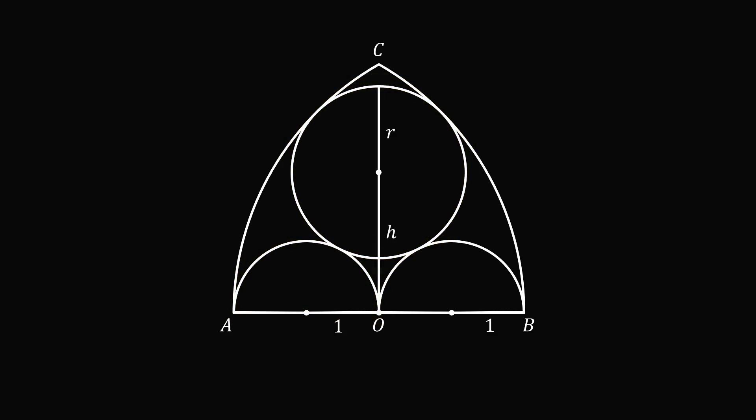So let's connect the centers and the tangent point. The semicircle has a radius equal to 1, and this inscribed circle has a radius that's equal to R. We now have a triangle here, and we're going to show that it's a right angle at the point O. How do we do that?